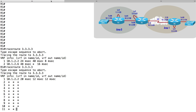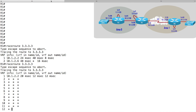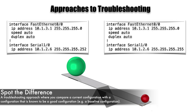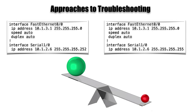Yet another approach to troubleshooting is to compare our baseline configuration against the configuration we see right now. Let's say the configuration snippet on the left of the screen is from my baseline documentation, but the configuration on the right is what's configured right now on the router. Maybe we swapped out a router and tried to reconfigure it just as it was before, but something doesn't match up. The difference is that very last line — the IP address command for interface serial 1-0. The baseline on the left has a 30-bit subnet mask, meaning two IP addresses would be usable on that subnet, perhaps for a point-to-point link. But the configuration on the right has a 32-bit subnet mask, meaning there's only going to be one usable IP address on that subnet: 10.1.2.6. We need to be able to spot the difference between a known good configuration and the configuration we have right now.